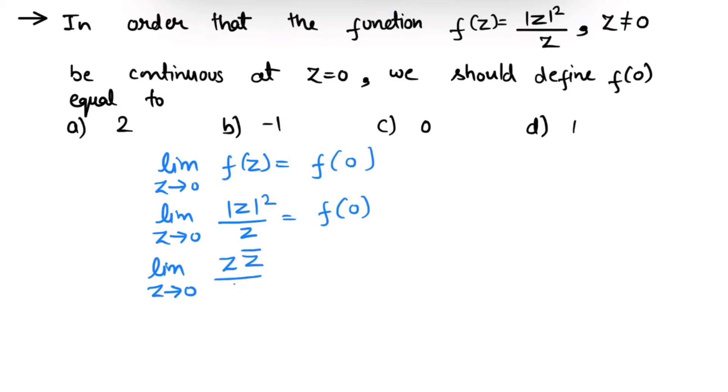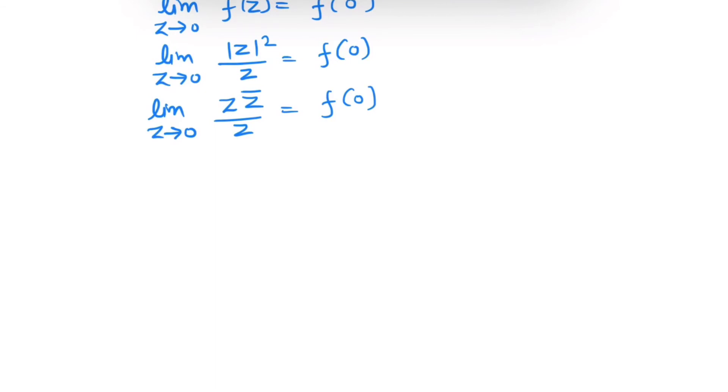And this equals to f(0). Now you can see this z can be cancelled out, so now we are left with limit z tending towards 0 of conjugate of z, and this equals to f(0).